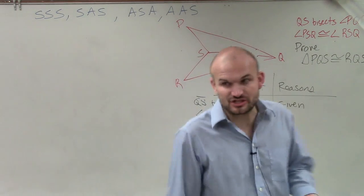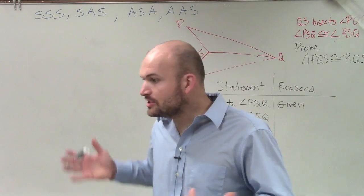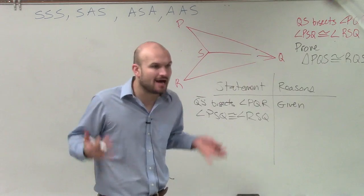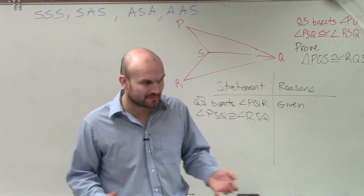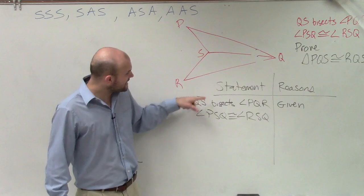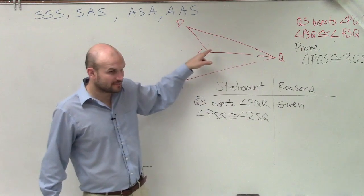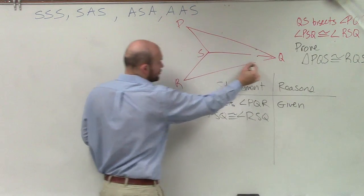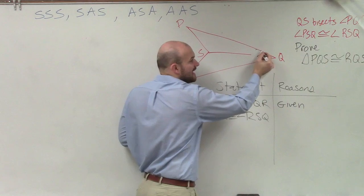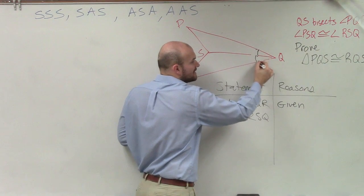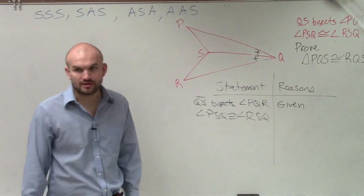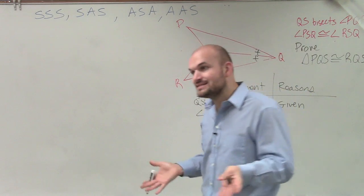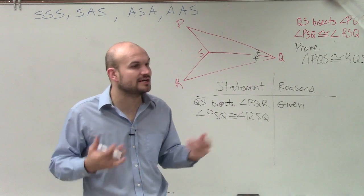And then we have angle PSQ is congruent to angle RSQ. Now, ladies and gentlemen, what I mentioned is just writing down the stuff is one thing, but you need to apply what does everything that you wrote down mean. How do those given statements transform my problem? So go back to your figure. If I say this line QS bisects angle PQR, that means it cuts it in half. So now I can say that those two angles are equal to each other. Does that make sense? If something bisects it, you can now say that the other two sides are equal in measure.